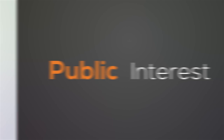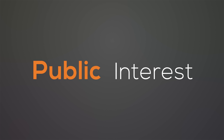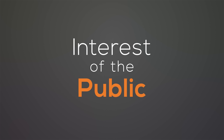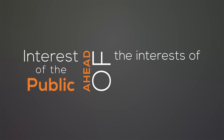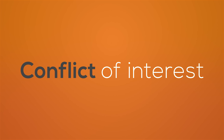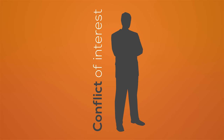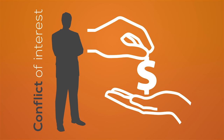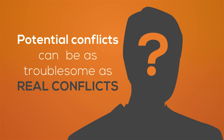Before we move on to RHPA-specific discussions, there are a few important concepts we should run through first. Public Interest: this is the concept that professional regulators should put the interests of the public ahead of the interests of the members of the profession. Conflict of Interest: a conflict of interest is a situation where a person has a private or personal interest in a matter — for example, an investment or a personal viewpoint — that influences or has the potential to influence their professional judgment in carrying out their official duties in an unbiased way. Potential conflicts can be as troublesome as real conflicts.